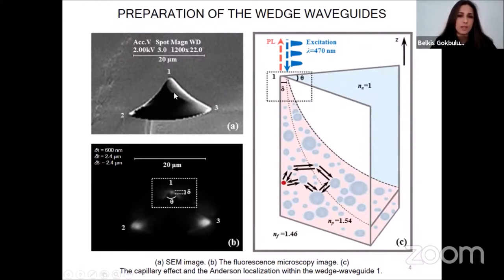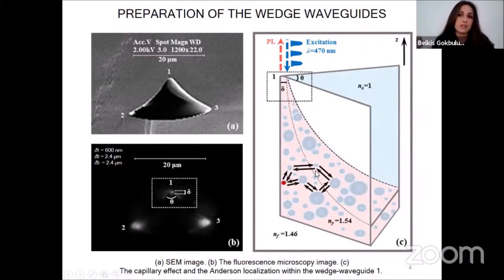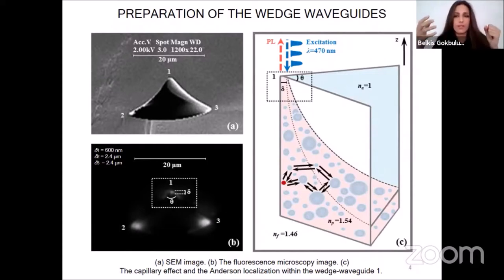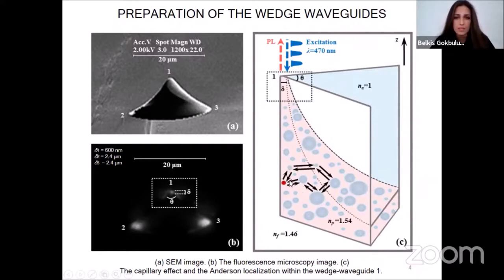The SEM and fluorescence microscopic images of the cross-sectional faces of the wedge-type optical waveguides are demonstrated in figures A and B respectively. A region depicted in detail in figure C shows the Anderson localization and the capillary effect within the waveguide structure. Transverse Anderson localization arises from the interference of electromagnetic waves in this kind of disordered polymeric waveguide medium. A fluorescence molecule is excited by a laser beam, and air bubbles — illustrated by blue-colored spheres — serve as scattering centers within the polymeric medium.